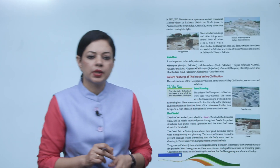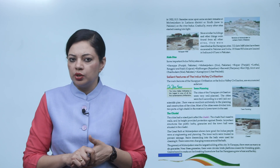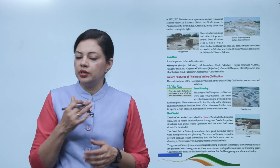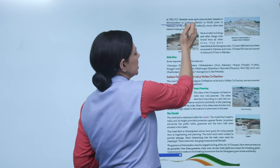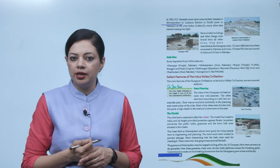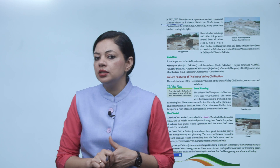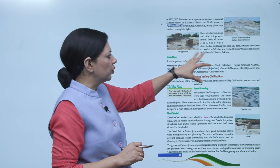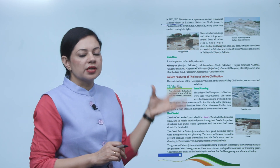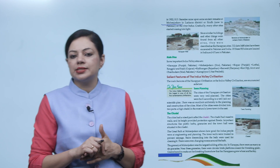The very next year, in 1922, R.D. Banerji came upon some ancient remains at Mohanjodaro in Larkana district of Sindh, now in Pakistan, on the river Indus. Gradually, many other sites started coming into light. Since similar buildings and other things were found from all other sites, they were described as Harappan sites. All the nearby sites discovered in Pakistan with similar remains are considered part of the Harappan Civilization.